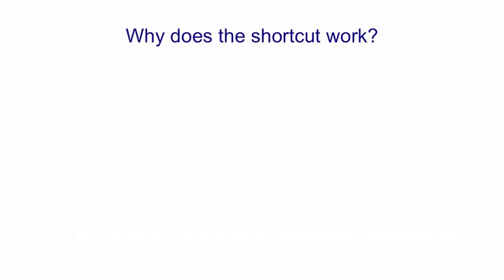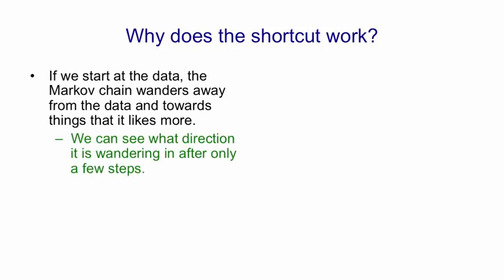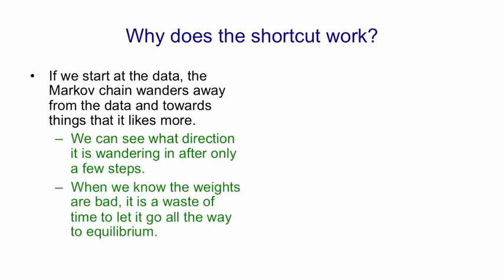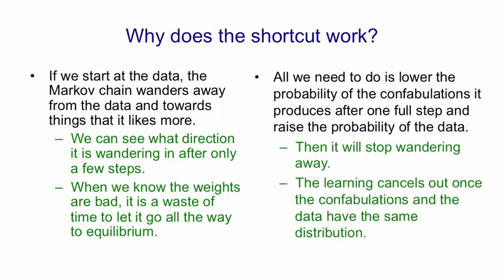The obvious question is why does that shortcut work at all? Here's the reasoning. If we start the chain at the data, the Markov chain will wander away from the data and towards its equilibrium distribution—towards things that its initial weights like more than the data. We can see what direction it's wandering in after only a few steps. If we know the initial weights aren't very good, it's a waste of time to go all the way to equilibrium. All we need to do is lower the probability of the reconstructions (or confabulations as a psychologist would call them) it produces after one full step, and then raise the probability of the data. That will stop it wandering away. Once the data and the places it goes to after one full step have the same distribution, the learning will stop.